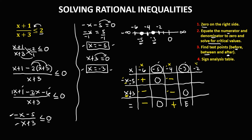For x equals negative 2: negative of negative 2 is positive 2, and positive 2 minus 5 is negative 3 — numerator is negative. Negative 2 plus 3 is positive 1 — denominator is positive. Negative divided by positive gives a negative result.